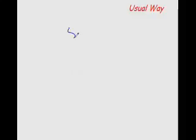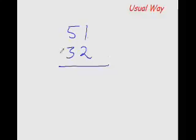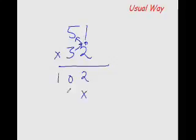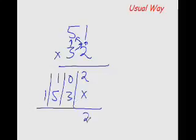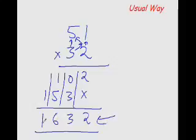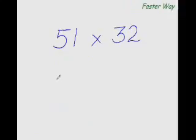The usual way of multiplying any two-digit number with any other two-digit number: 1×2 is 2, 5×2 is 10. Now 3×1 is 3 and 3×5 is 15. Add all the numbers in the column — 2, 3, 6, 1 — and the answer is 1632.